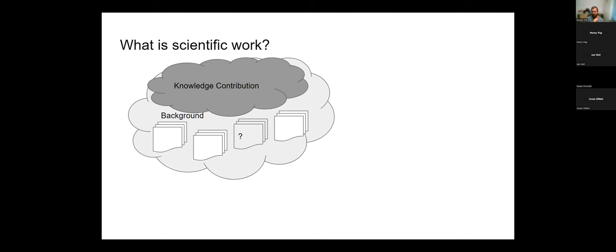For instance, if the research gap is that no one has examined what it means to have a lack of automated unit tests for a particular framework, different students can do different knowledge contributions, collecting different kinds of information to cover some part of that gap. The expression 'knowledge contribution' is important because we should contribute with new knowledge. If we don't contribute with new knowledge, we don't have a thesis.